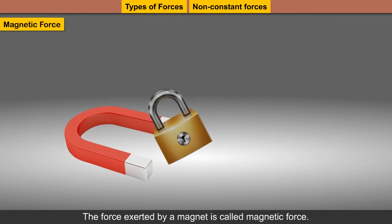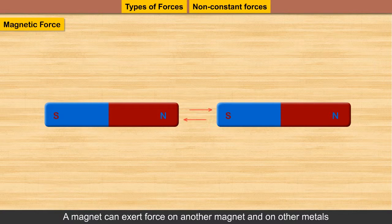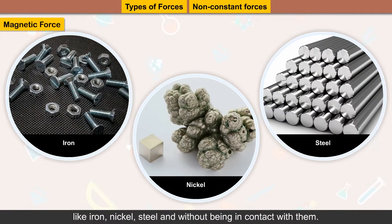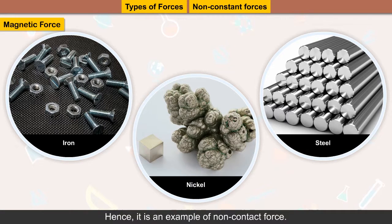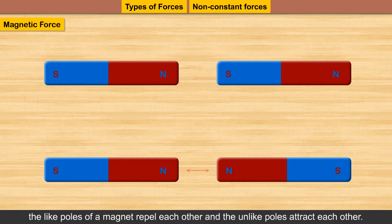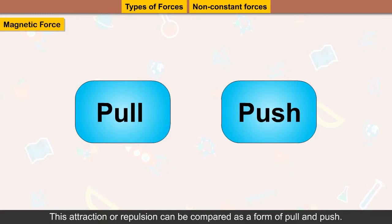Magnetic force: The force exerted by a magnet is called magnetic force. A magnet can exert force on another magnet and on other metals like iron, nickel, and steel without being in contact with them. Hence, it is an example of non-contact force. The like poles of a magnet repel each other and the unlike poles attract each other. This attraction or repulsion can be compared as a form of pull and push.